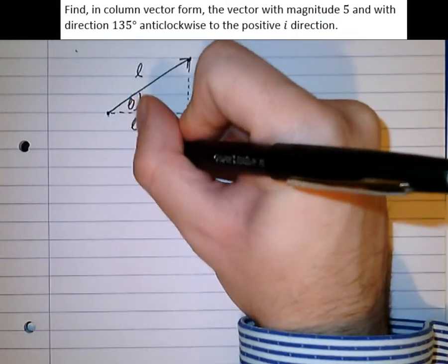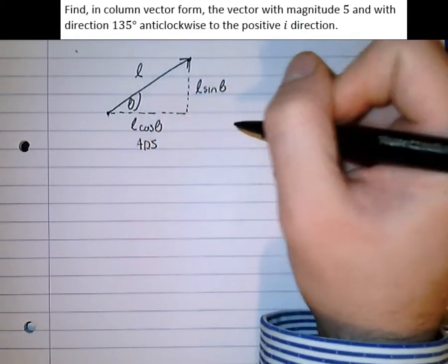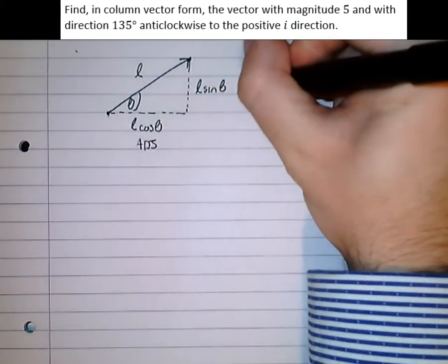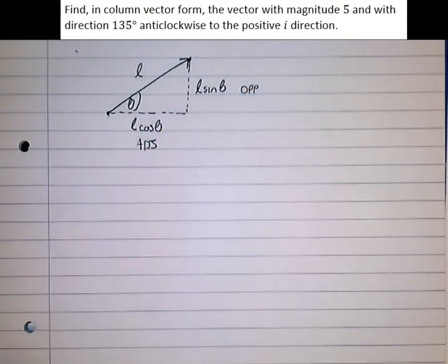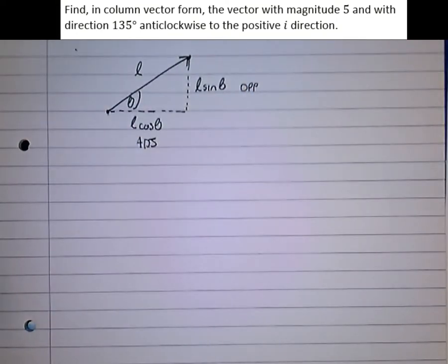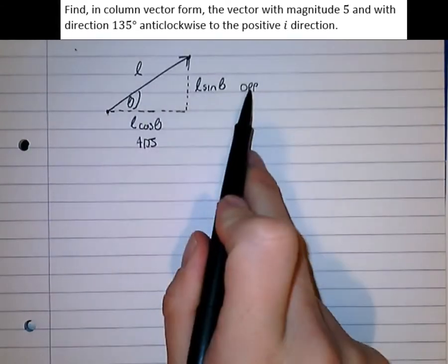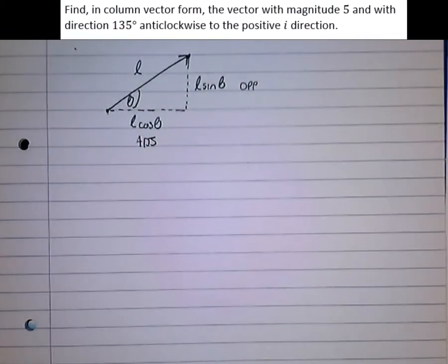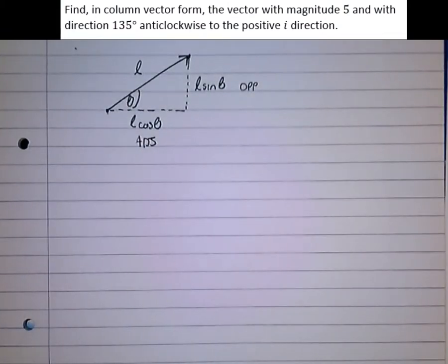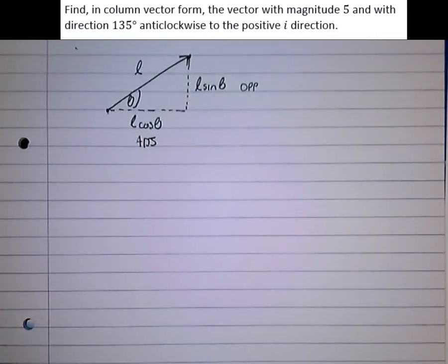So it's always the adjacent L cos theta, and the opposite L sine theta. Now it doesn't matter which way this triangle is oriented, it's always L sine theta for the opposite and L cos theta for the adjacent. So bearing that in mind, let's have a look at this next example.